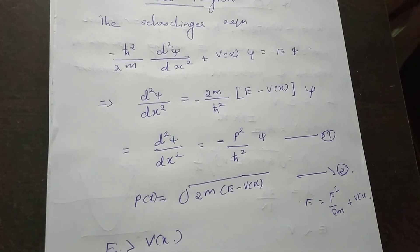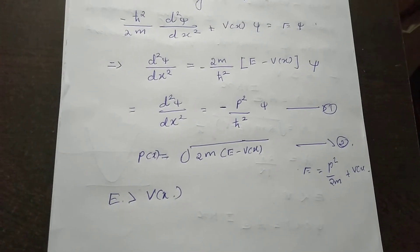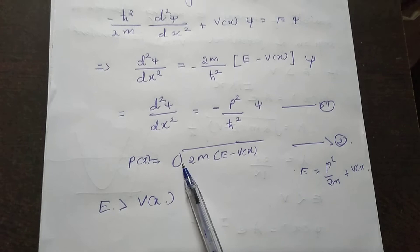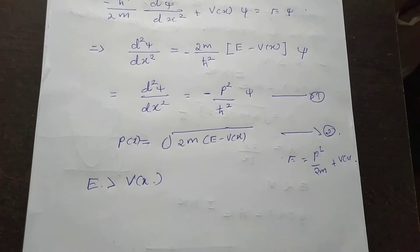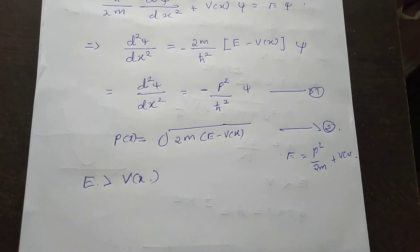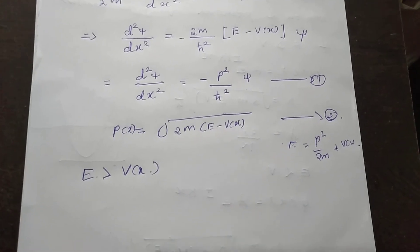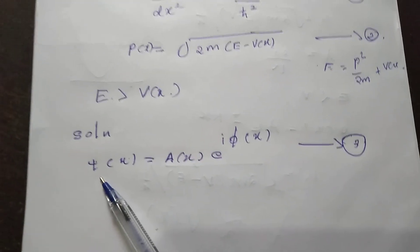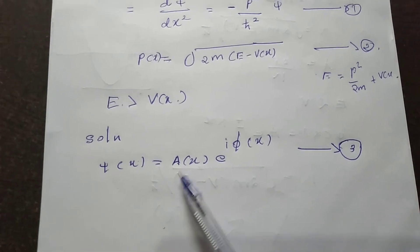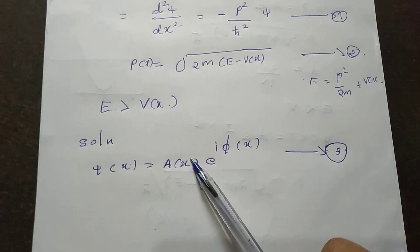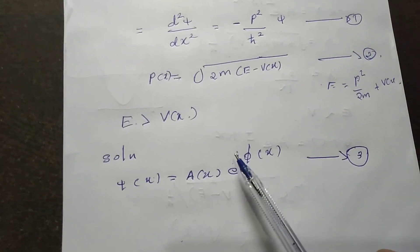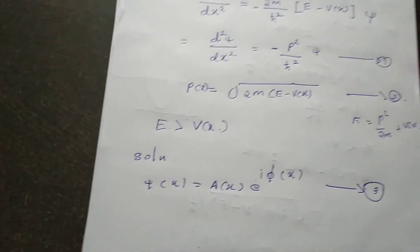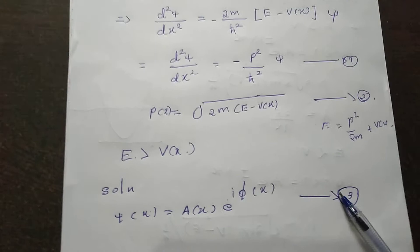We assume an exponential function form. We choose the solution of the Schrödinger equation as psi(x) equal to A(x) times e raised to i phi(x), where A(x) is the amplitude of the given wave function and phi(x) represents the phase term of the wave function psi(x). Put it as equation number 3.